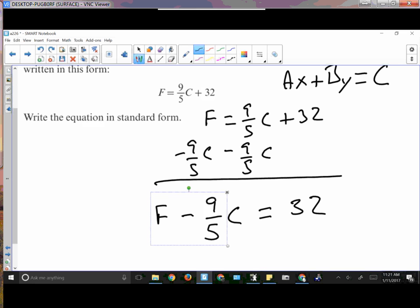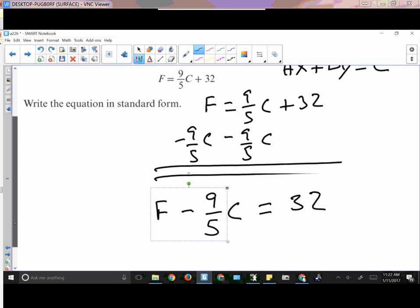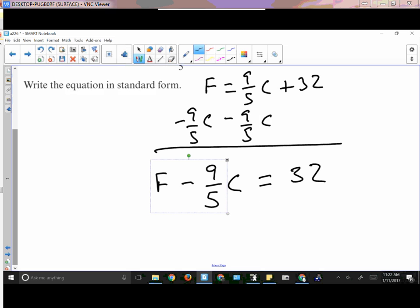I end up with F - 9/5C = 32. Is that all it is? Do I have to do anything more? Is it in the proper form? It fits. Now, if you're looking at the book, you notice it doesn't look quite the same. Generally speaking, they want A and B to not be just real numbers, but to be integers. If I wanted to get rid of that fraction, what should I multiply the entire equation through by?